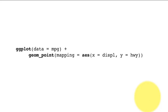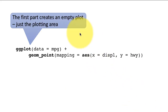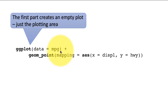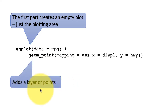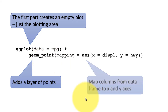Let's understand this command in a little more detail. The first aspect, ggplot(data = mpg), creates an empty plot — it only creates the plotting area. If you just executed ggplot(data = mpg) alone, you would see nothing, because it doesn't plot anything on the plotting area, it just prepares it. Then geom_point is the one adding a layer of points — a scatterplot layer — and the mapping connects the data to the plot.